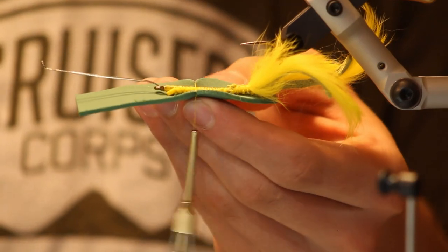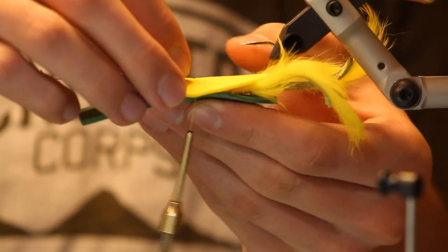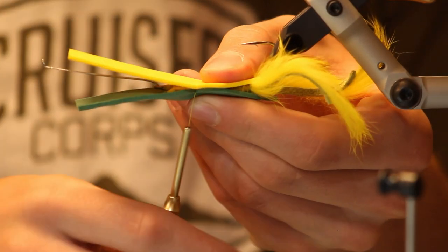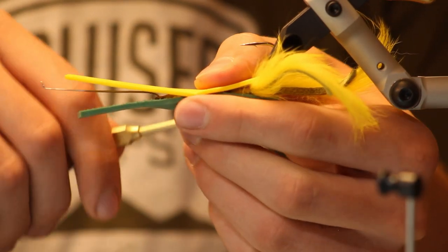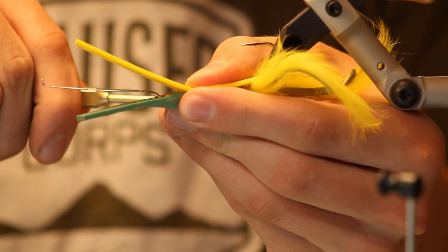I'm going to flip this over. Put this yellow back to the bend of the hook. Take a wrap. Tighten it down.